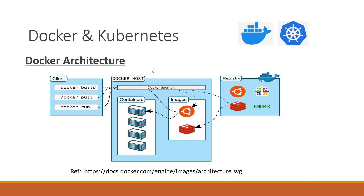The client can be in the same machine as the Docker host or in a different machine. When the client executes a command, for example docker build, the corresponding build context will be sent to the Docker daemon. The daemon will process that and create an image out of it. Once the build is completed, the corresponding Docker image will be stored in the Docker host.